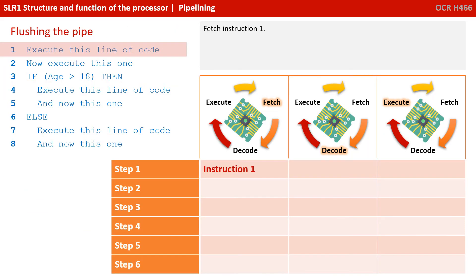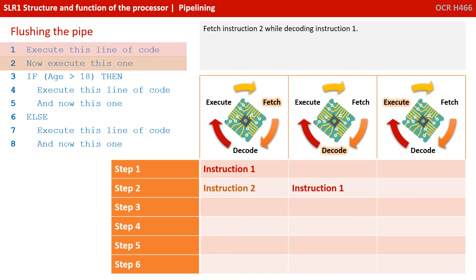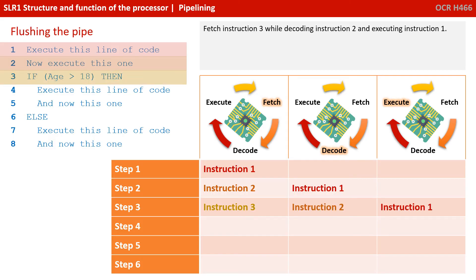Let's work through a simple piece of pseudocode. Line one has been fetched. Using pipelining, line one moves on to be decoded while the processor also fetches line two. We then fetch instruction three while decoding instruction two and executing instruction one. So far this is all working perfectly fine. We fetch instruction four while decoding instruction three and executing instruction two.